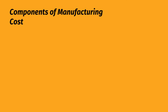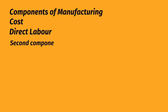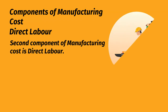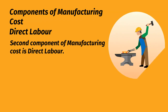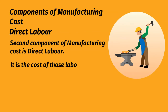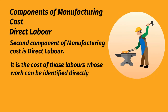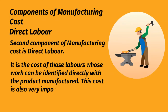Components of manufacturing cost: Direct Labor. The second component of manufacturing cost is direct labor. It is the cost of those laborers whose work can be identified directly with the product manufactured. This cost is also very important in determining the cost of production.